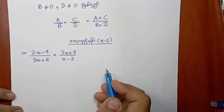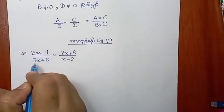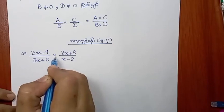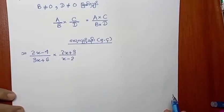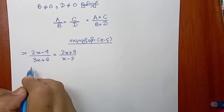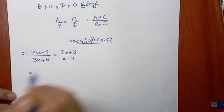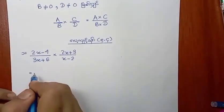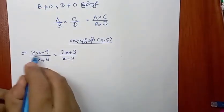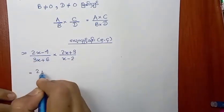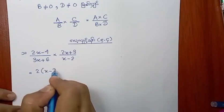Now, we will put 2a minus 4 times 3a plus 6 times 2a plus 3 times 3 times 2. We will write 2a minus 4 times 3a plus 6.